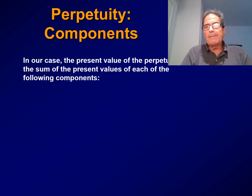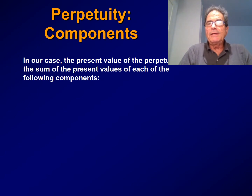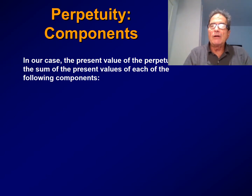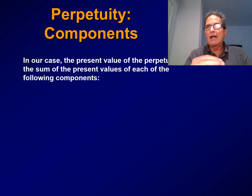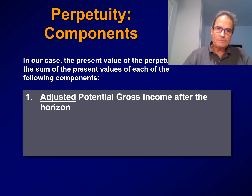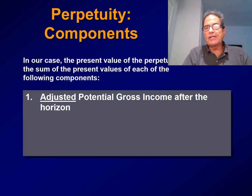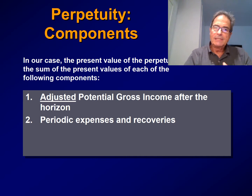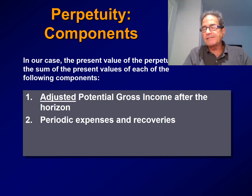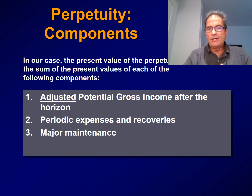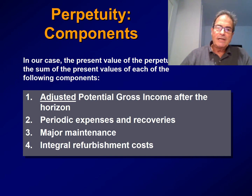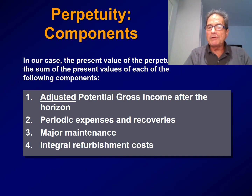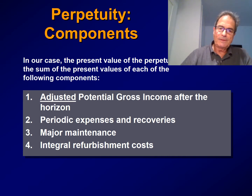In our case, the present value of the perpetuity is represented as the sum of the present values of each of several components. The first component is adjusted potential gross income after the horizon. The second is periodic expenses and recoveries. The third is major maintenance. And the last is internal refurbishment costs.